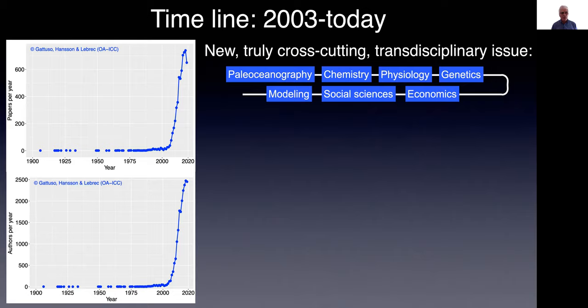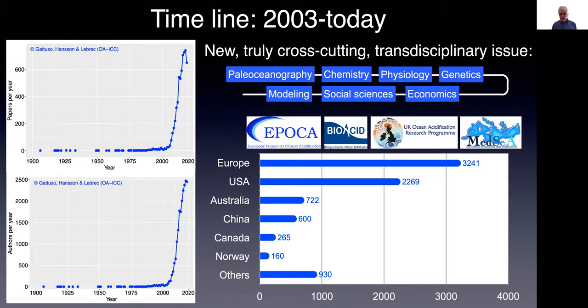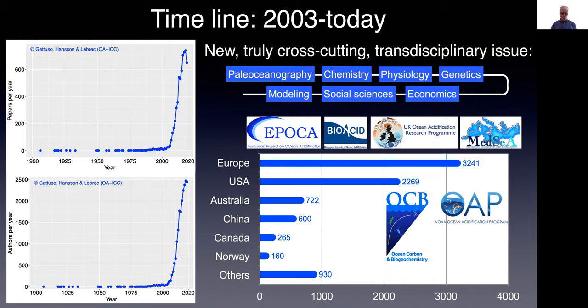The reason for this tremendous increase in papers and knowledge is that ocean acidification is truly a cross-cutting, transdisciplinary area, cutting across many fields like paleoceanography, chemistry, physiology, genetics, modeling, social sciences, and economics. The distribution of papers shows two regions standing out — Europe first, mostly because very early on there were large-scale projects launched: EPOCA started in 2008, then the German Bio-Acid program, the UK Ocean Acidification program, and the METSI project, explaining this predominance of European papers.